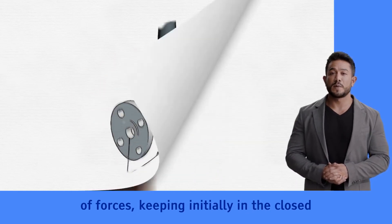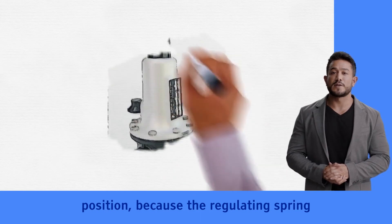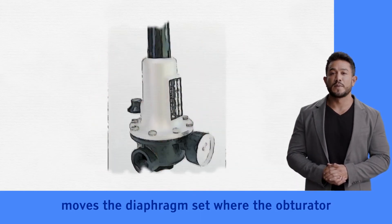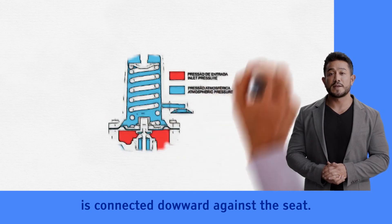It is based on principle of equilibrium of forces keeping initially in the closed position, because the regulating spring moves the diaphragm seat where the obturator is connected downward against the seat.